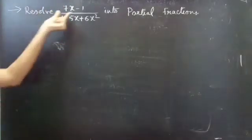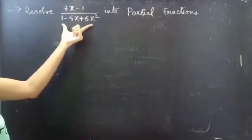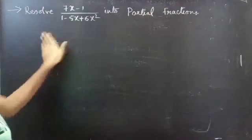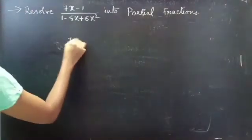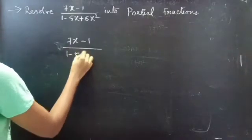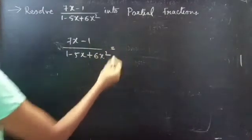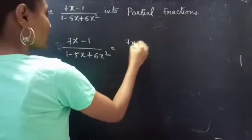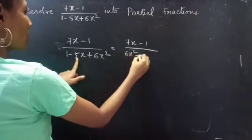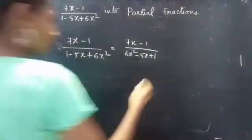Problem to resolve: express (7x − 1) / (1 − 5x + 6x²) into partial fractions. We are given a fraction: (7x − 1) / (1 − 5x + 6x²), which can be rewritten as (7x − 1) / (6x² − 5x + 1).